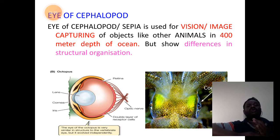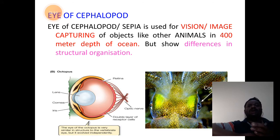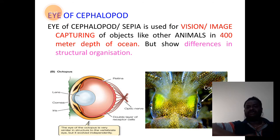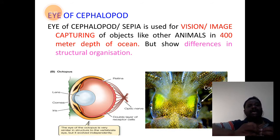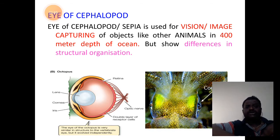They are used to capture the image of objects — they perform the sensory function of vision. The importance of the eye of cephalopod is that it can capture an image even at a depth of 400 meters in the ocean.